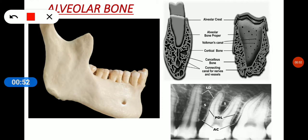The alveolar process is basically the socket. The inside of the socket, or the part of the alveolar process which is facing towards the tooth — this part — is called the alveolar bone proper. This alveolar bone proper is radiographically called lamina dura, and histologically it is called the cribriform plate, because in histology we see many openings.